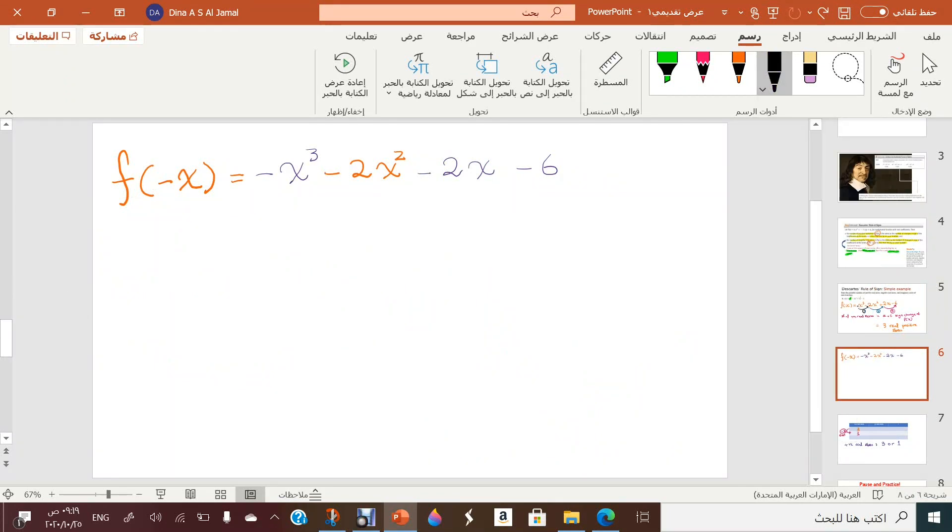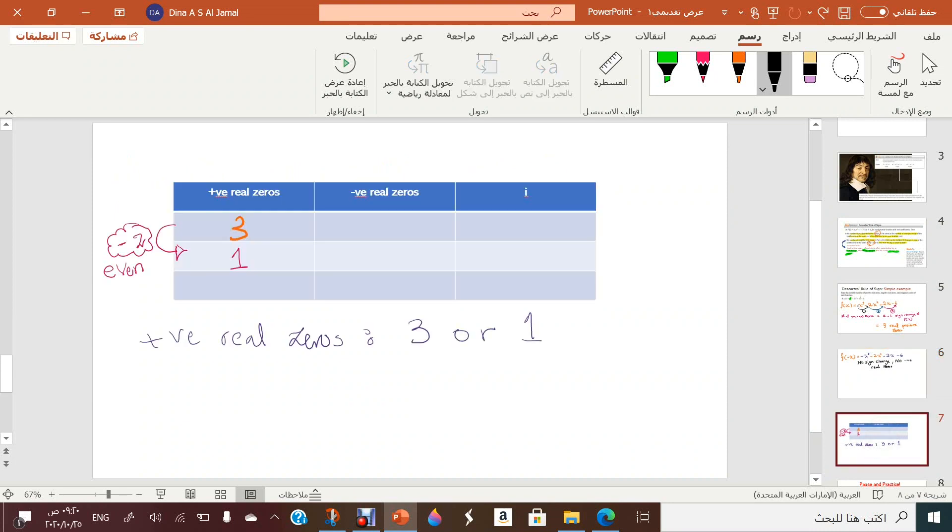Now let's count how many sign changes from negative to negative. Do you have any sign change? Nothing. From negative to negative, from negative to negative. So you don't have any sign change with this. No sign change. Then where are the rest if there is no negative? So here zero, here zero. So where is now the other zero?